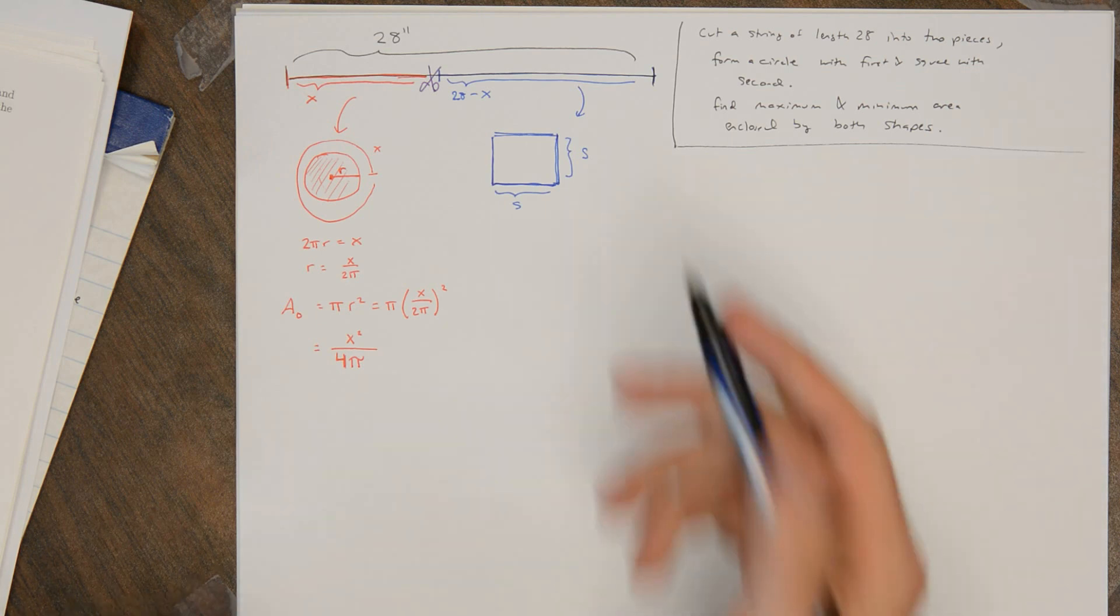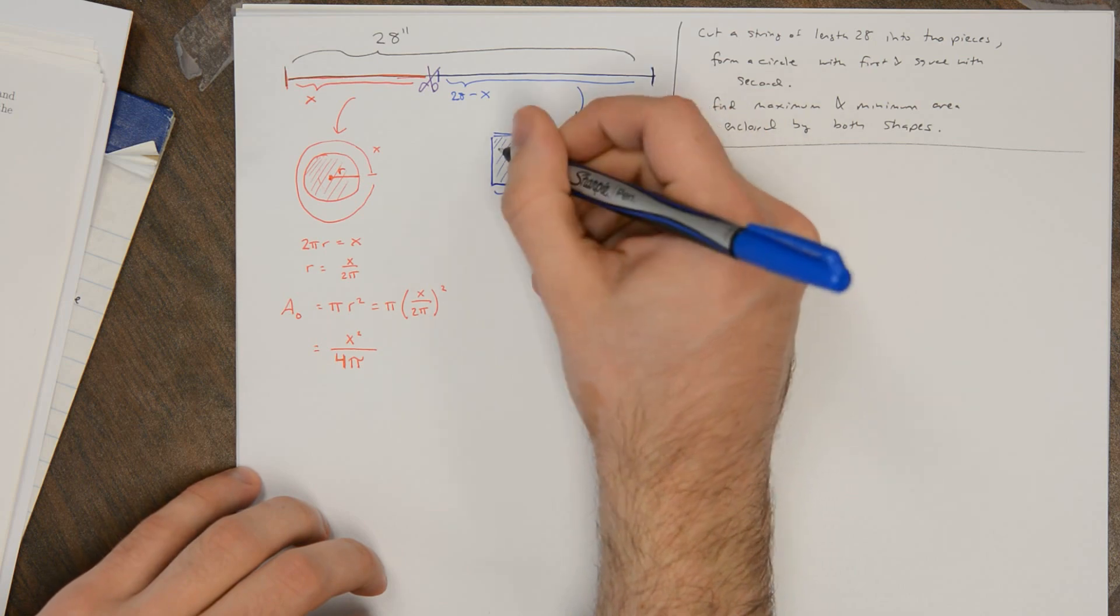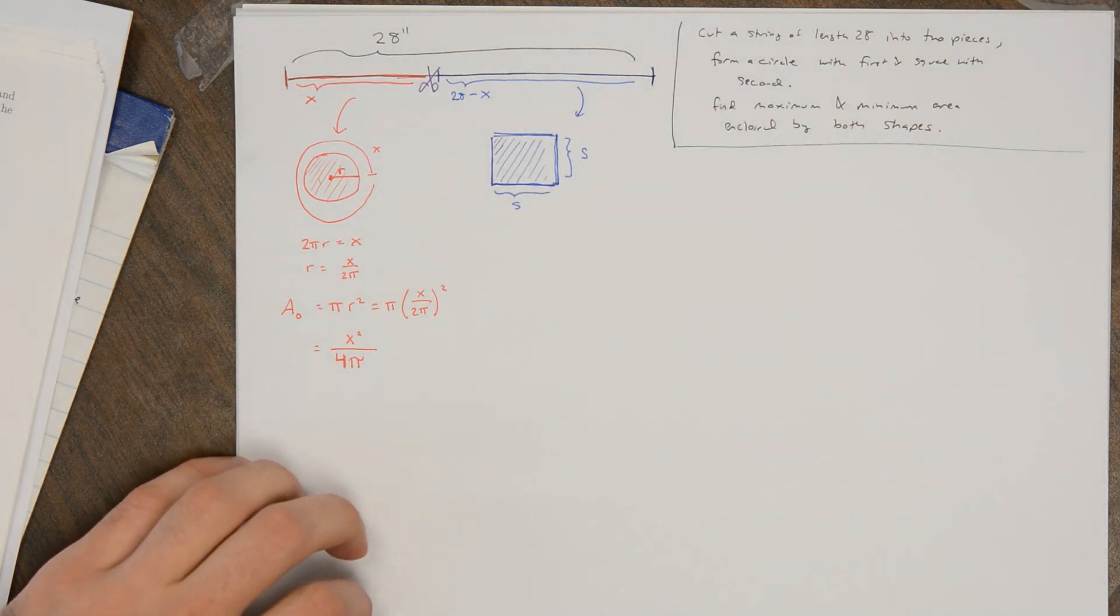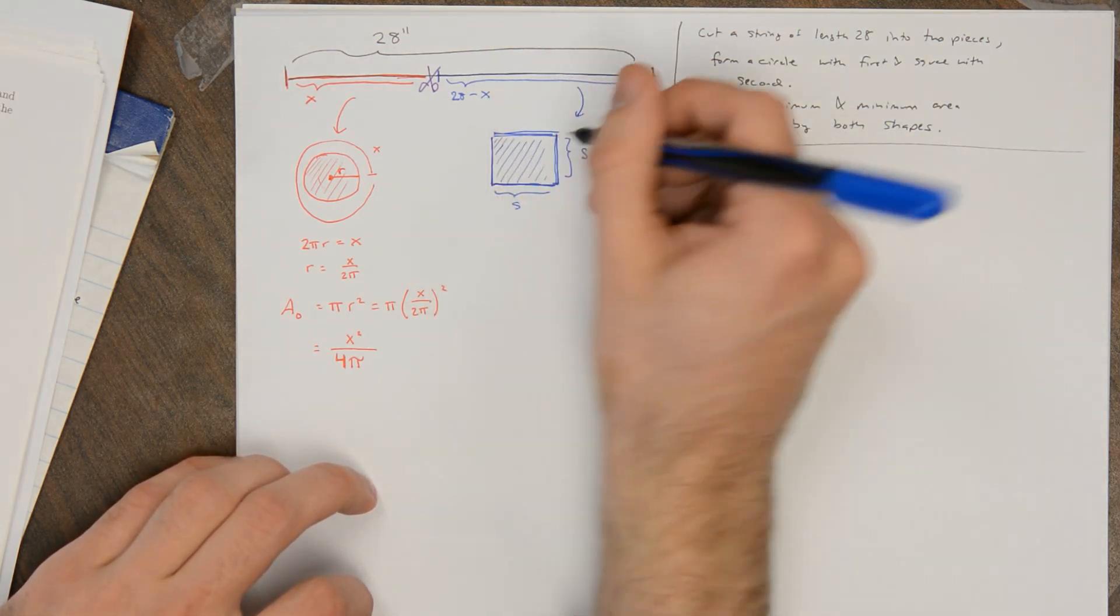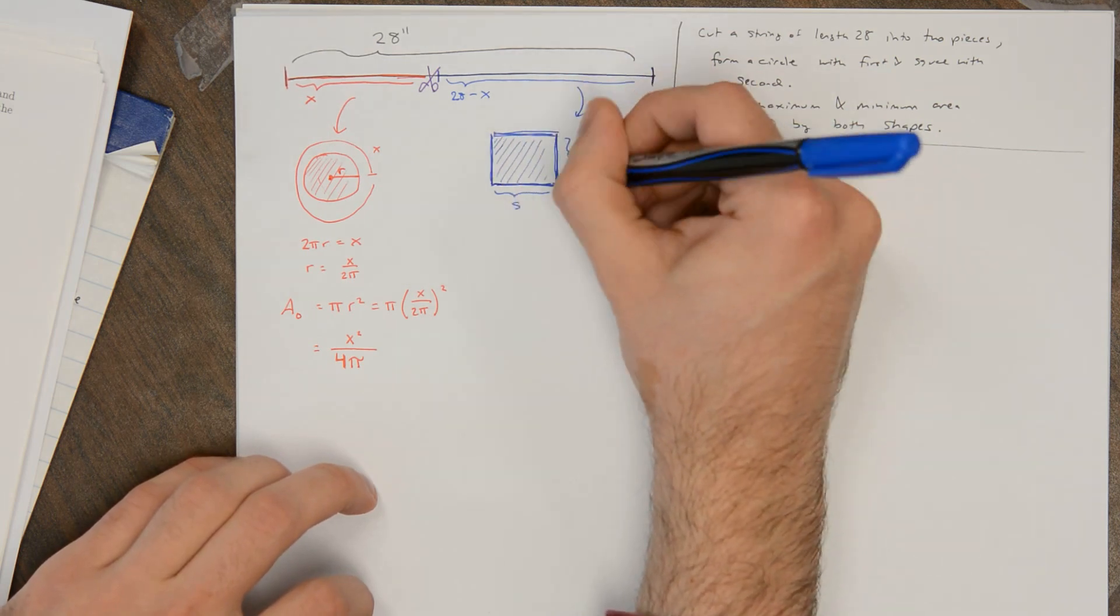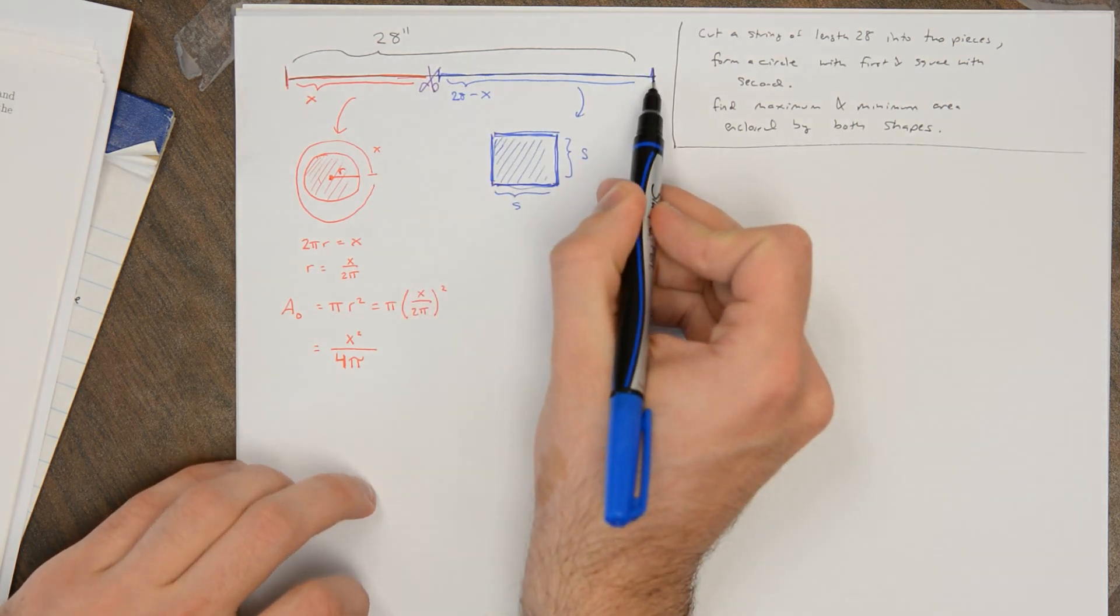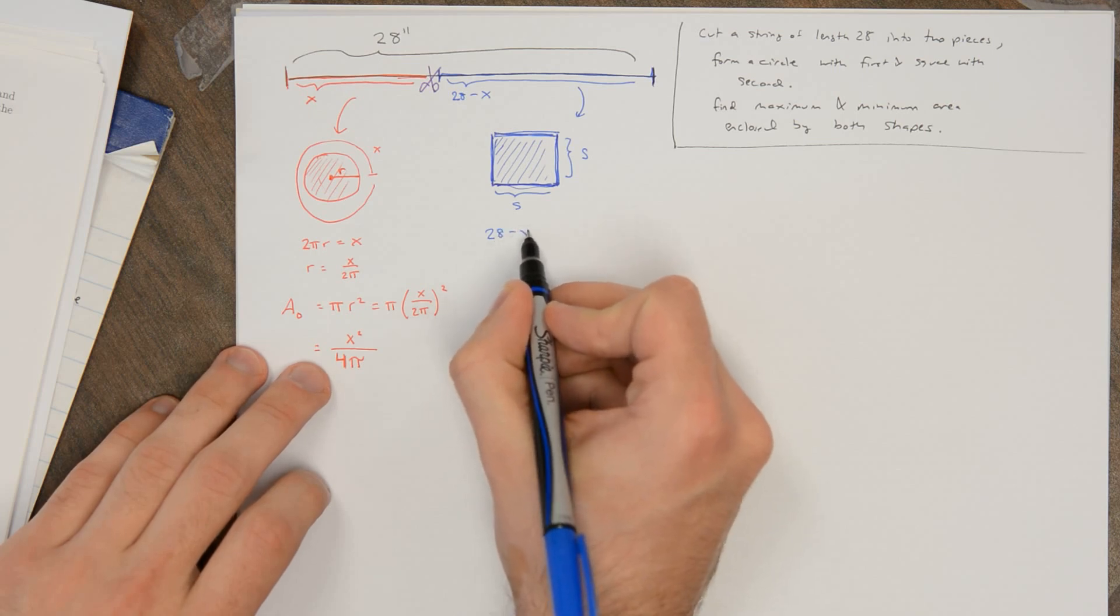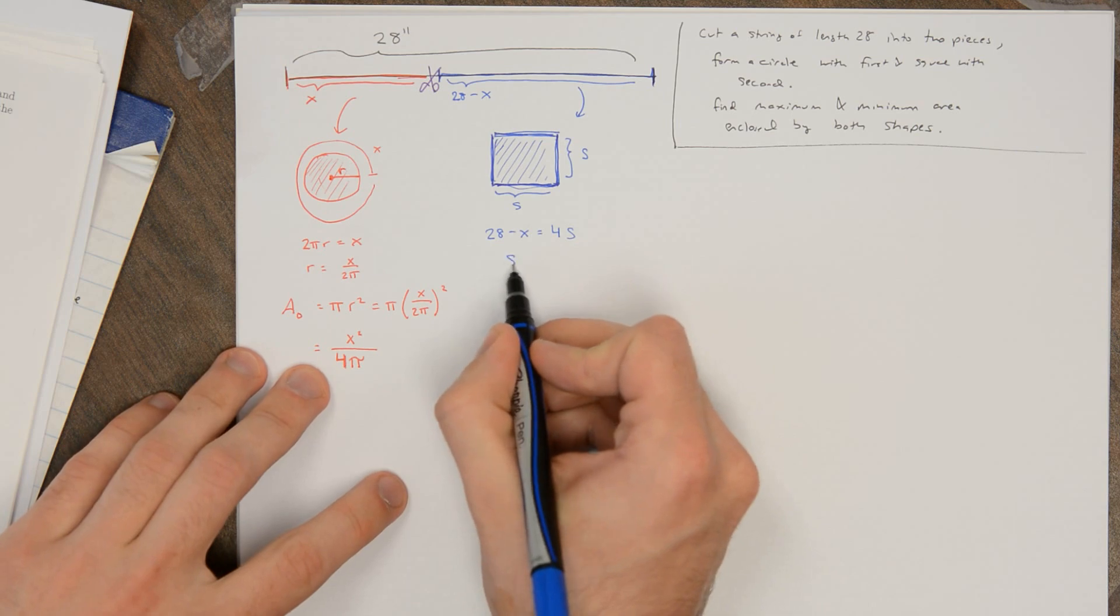And I'm going to use a similar idea for here. But I want to find the side length s so I can find the area of the square, which will be s². And the observation is that the total perimeter of the square, which is s + s + s + s, so 4s, that's the same as the length of the string that I used to create that square. So 28 minus x is equal to 4s. Now I can solve this by dividing both sides by 4.